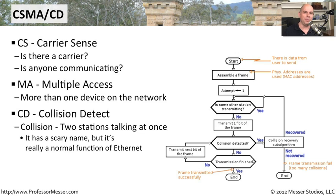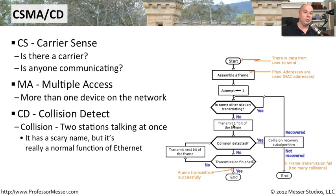It sounds like a scary name — people think collisions are a bad thing. But in reality, collisions are simply the way that Ethernet works. There's a whole standard set up for CSMA-CD. If you're sending information and nobody else is transmitting, you transmit a little bit of the frame, and the Ethernet device can tell: there's interference from somebody else who just happened to communicate at exactly the same time.